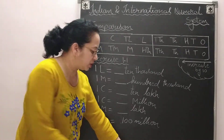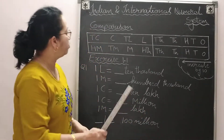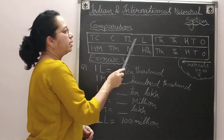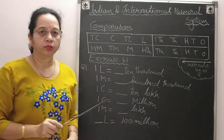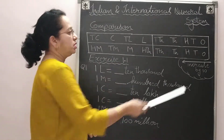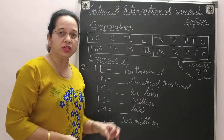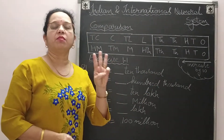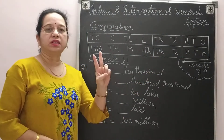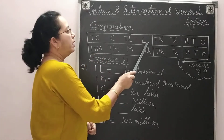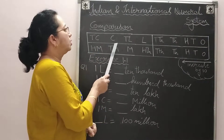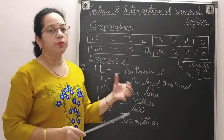The first one is our Indian number system. The places are: ones, tens, hundreds — pause — thousands, ten thousands — pause — lakh, ten lakh — pause — crore, ten crore. The first comma comes after three digits, then each subsequent comma comes after two digits.